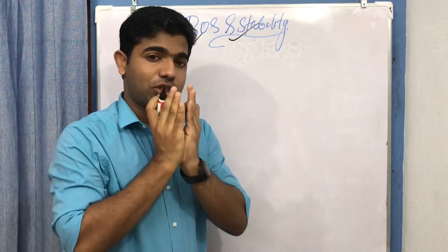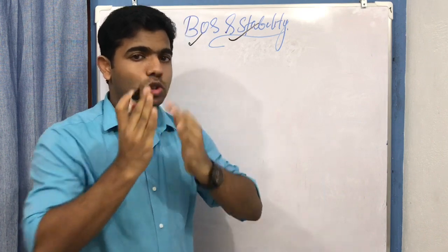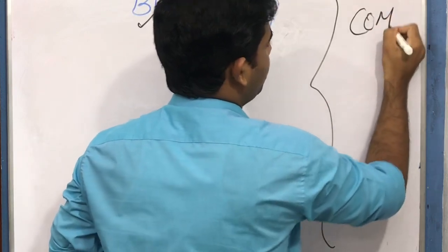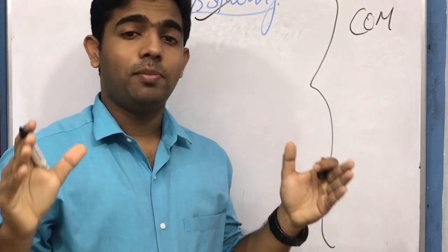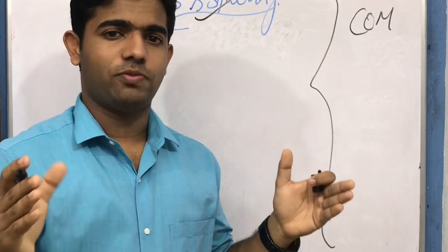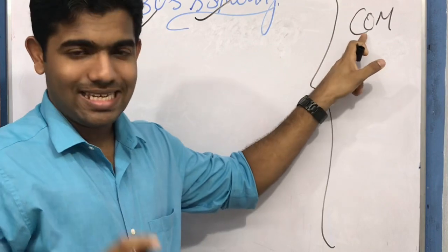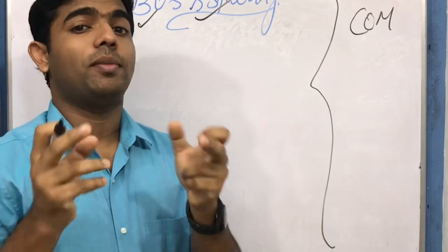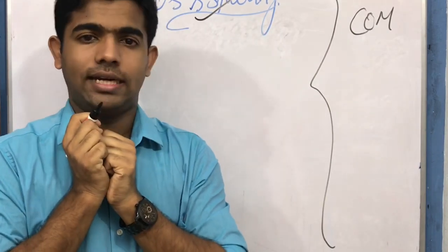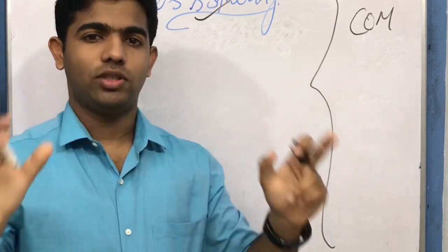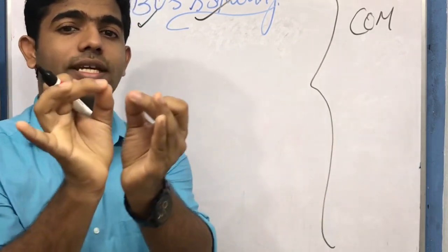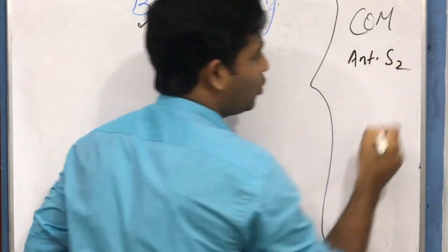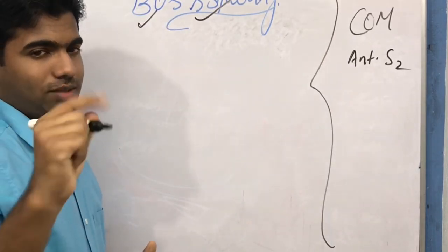Before discussing base of support and its relation to stability, we need to recollect a few things from the previous video — the concept of center of mass. If you are watching this for the first time, kindly watch the previous video. The center of mass is a hypothetical point in the human body in which the entire mass of the body is assumed to be concentrated. In human beings, it comes approximately anterior to the S2 vertebra.